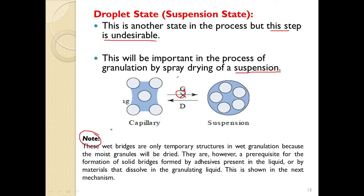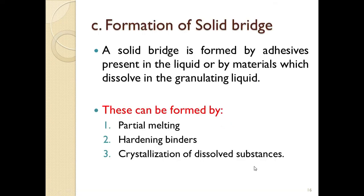These wet bridges or solid-liquid bridges are only temporary structures in wet granulation — only present while granulating fluid is added and the granule is moist. However, they are prerequisites for the formation of solid bridges. Liquid bridges formed by adhesives present in the granulating liquid are the requirement for subsequent solid bridge formation.